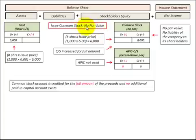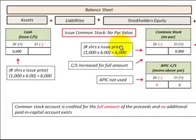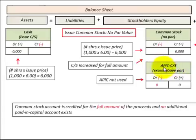For issuing common stock with no par value, our equity account for common stock is increased for the full amount received when we issued the stock — we credit it for the full amount, which is the number of shares issued times the issue price. On our asset side, we debit or increase our cash for the number of shares issued times the issue price. So our cash debit of $6,000 balances with the credit in our common stock account of $6,000. When using no par value, we do not create an additional paid-in capital account for common stock — that account does not exist; the full amount is credited to common stock.